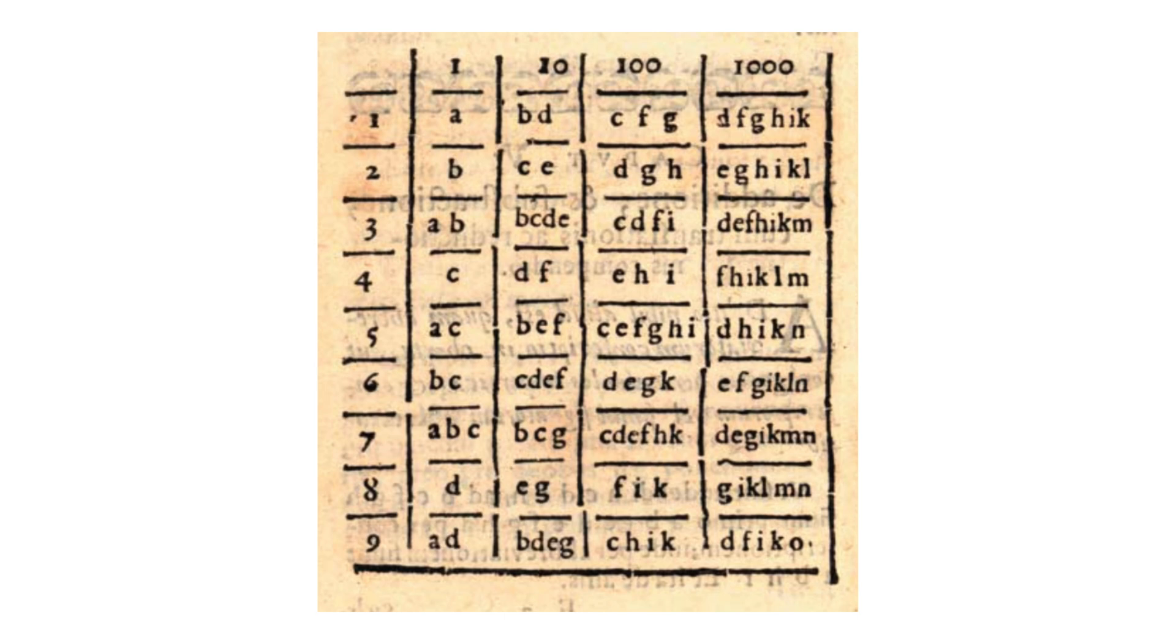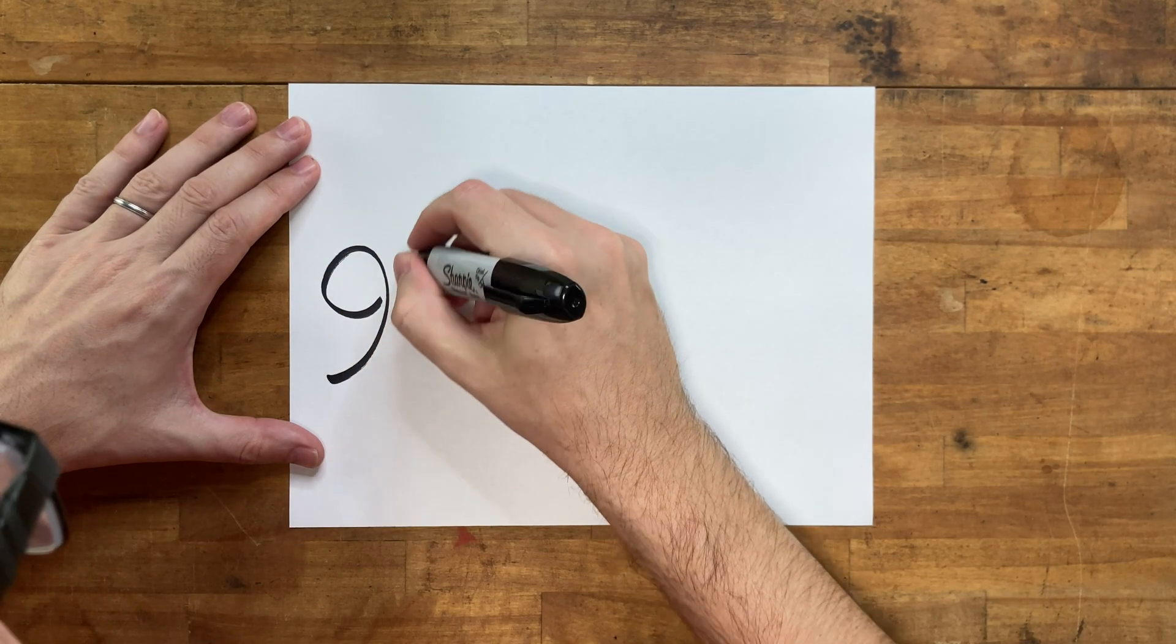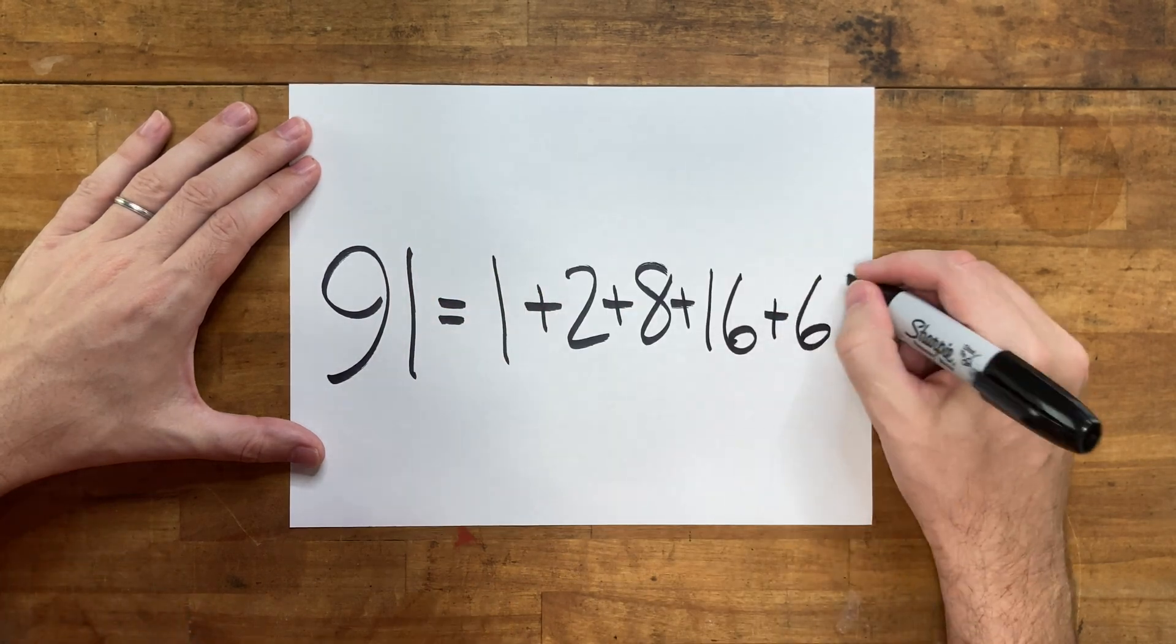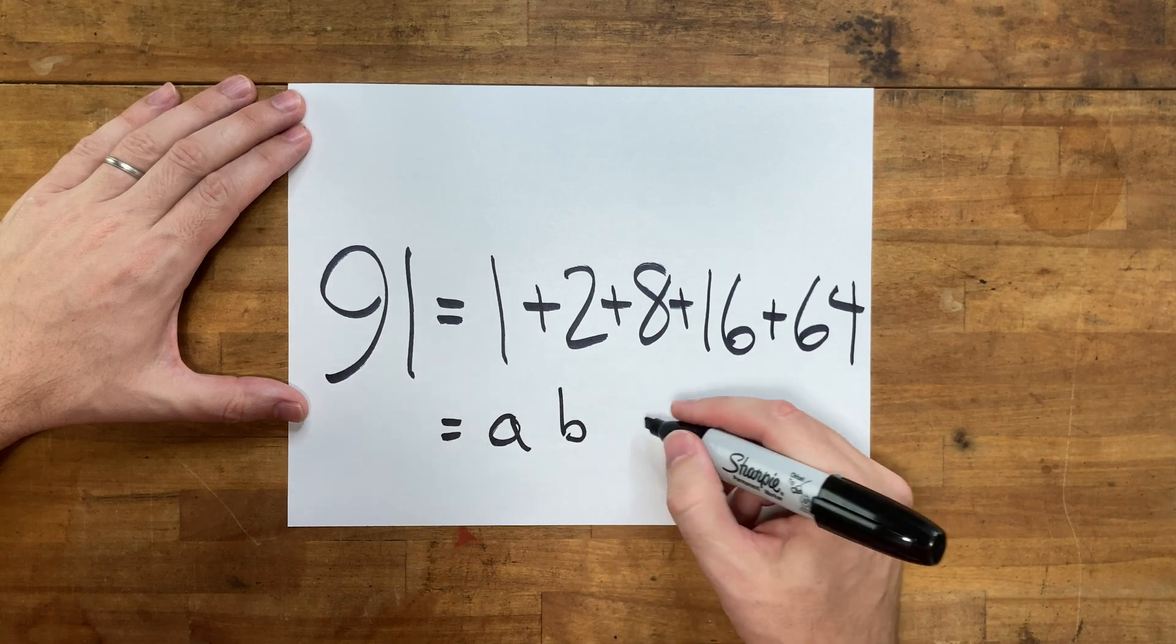Anyway, when you see letters next to each other, that represents their sum. So, A, C, D would be 1 plus 4 plus 8, which is 13. And if I wanted to write 91, well, you've got to break it up into powers of 2, like this. So, 91 would be A, B, D, E, G.